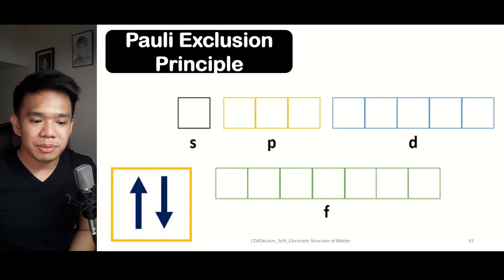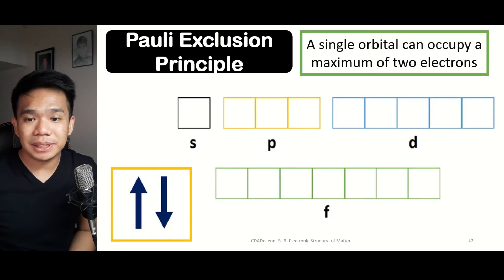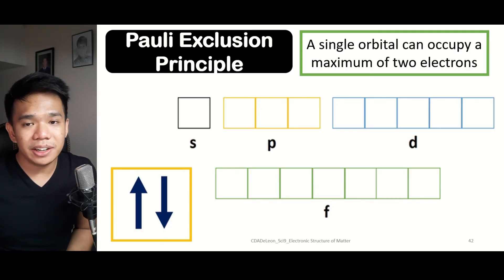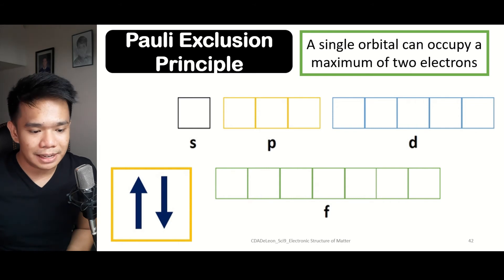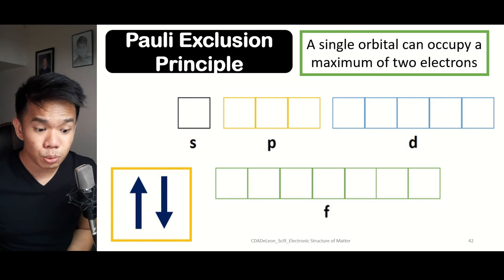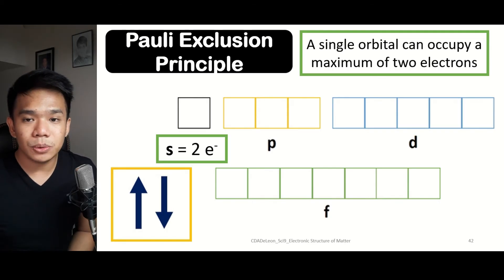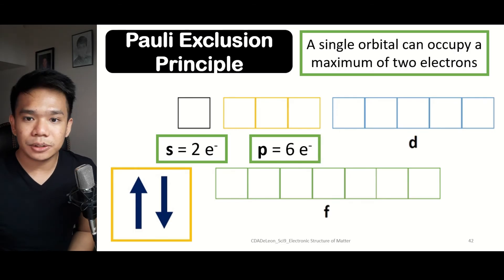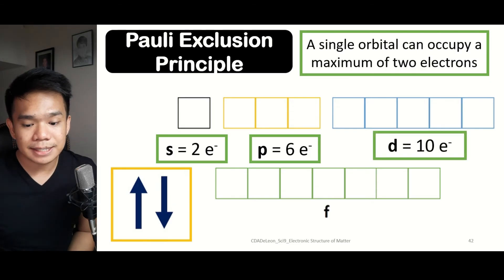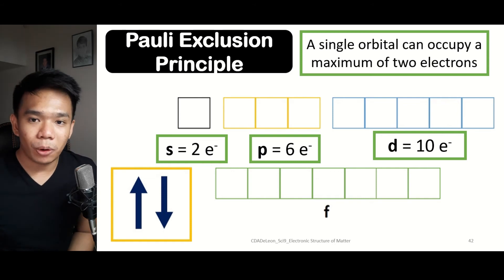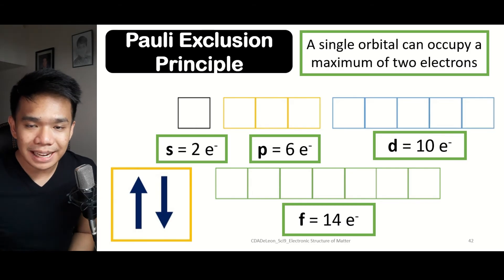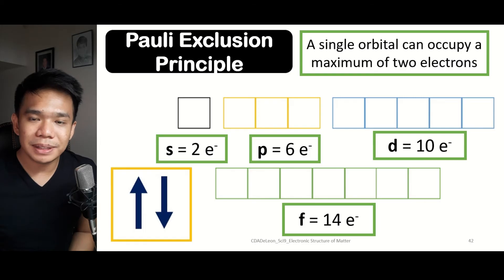Next, we have the Pauli Exclusion Principle, which states that a single orbital can only be occupied by two electrons. Each orbital is represented by a box. The S sublevel has one box since it holds only two electrons. The P orbital can handle six electrons, so divided by two electrons per orbital, that gives three boxes. The D sublevel has 10 electrons giving five boxes, and lastly the F orbital has 14 electrons, so 14 divided by 2 gives seven boxes.